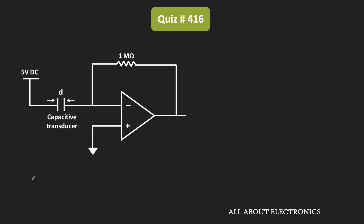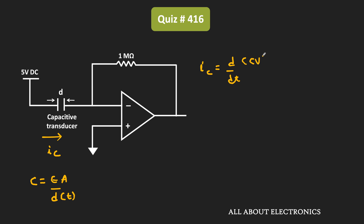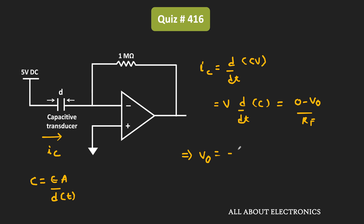Because if you see the expression of the capacitor, C equals εA divided by D. And in this case, the distance between the two plates is changing with time, which means this capacitance is also changing with time. So for the given circuit, the current Ic equals d(CV)/dt. Since the input voltage is a fixed value, this Ic equals minus Vout divided by Rf. Therefore, the output voltage equals minus Rf times V times dC/dt.